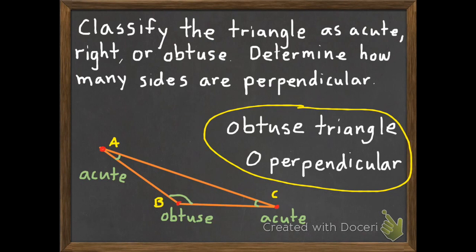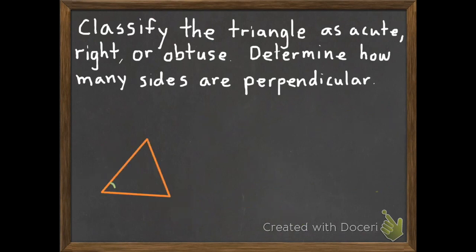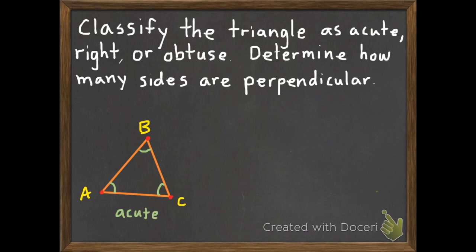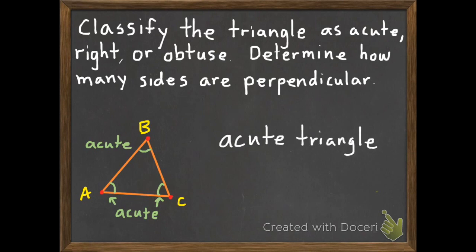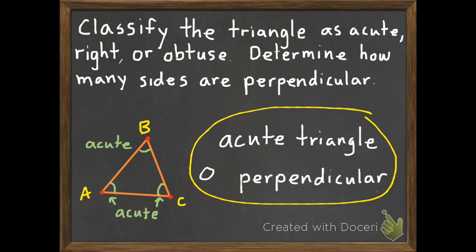I want you to try these next two. Write down if you think it is an acute, right, or obtuse triangle, and then determine if there are any perpendicular lines. Unpause once you're ready and we'll see if you got the answer right. Both of these are acute — if we have all three acute angles, it is an acute triangle. And we have zero perpendicular lines; none of our lines meet at a 90 degree angle.